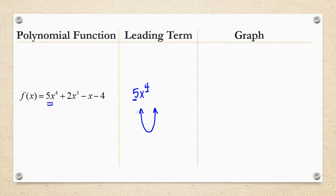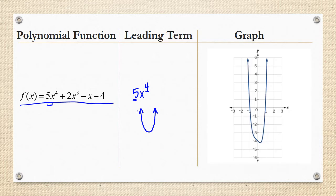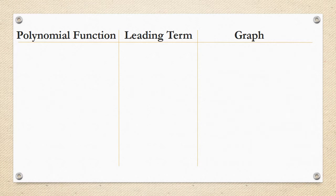Let's look at what the graph of this entire function ends up looking like. You can see the end behavior: as your x's are getting very large or really small, your function is going up. And as your x's get really large, your function is also going up.